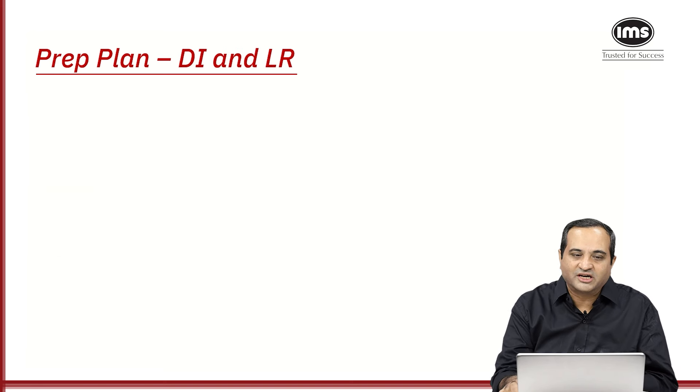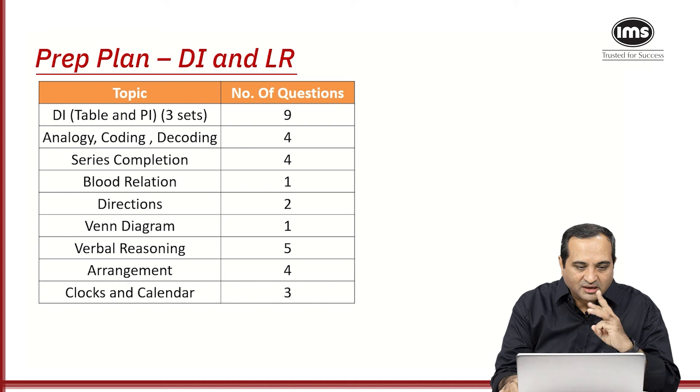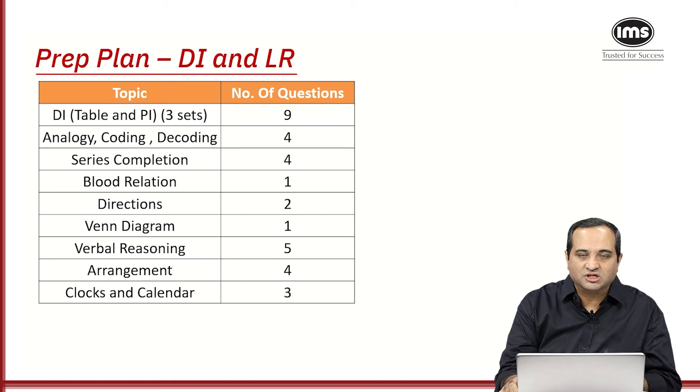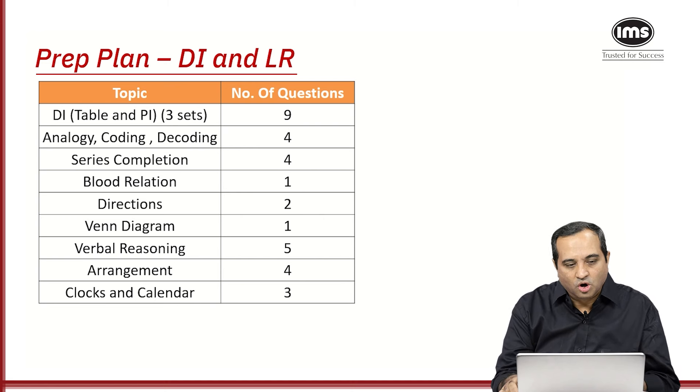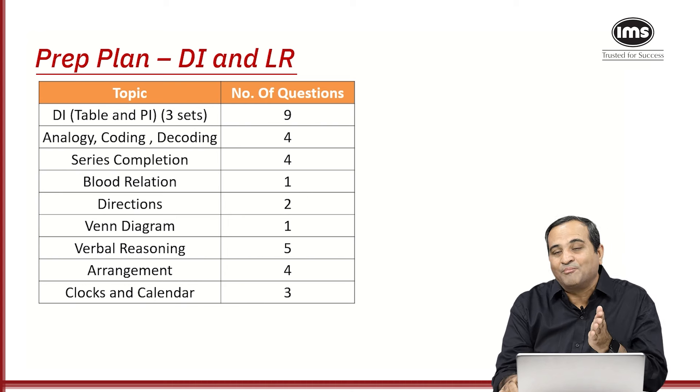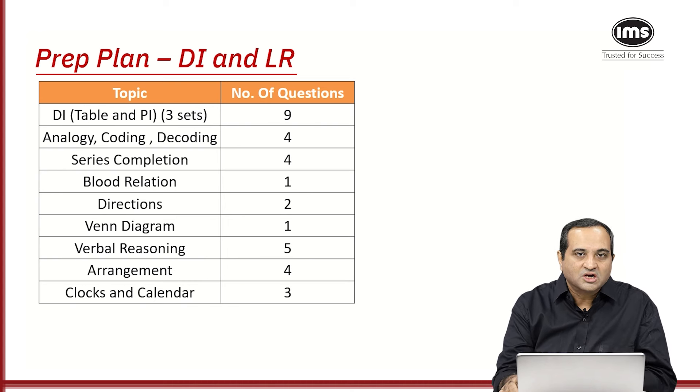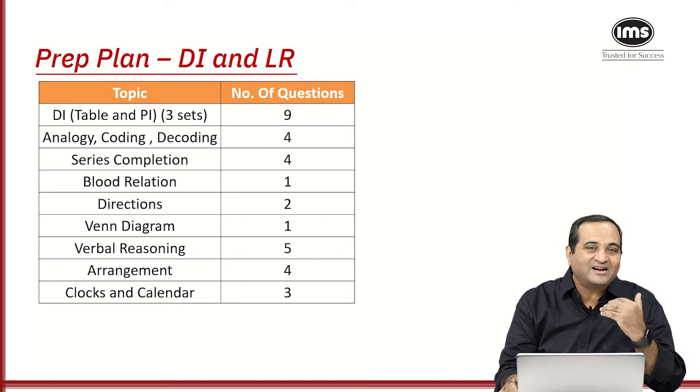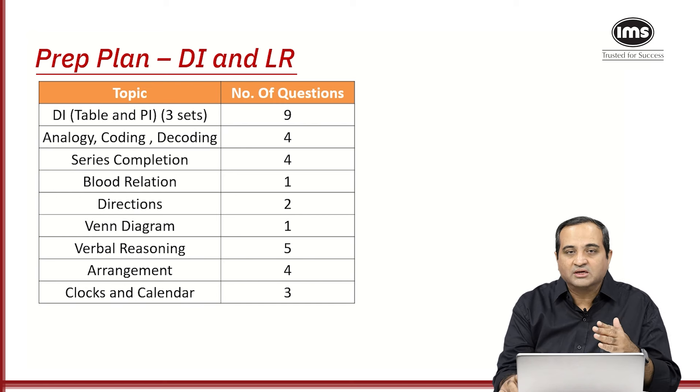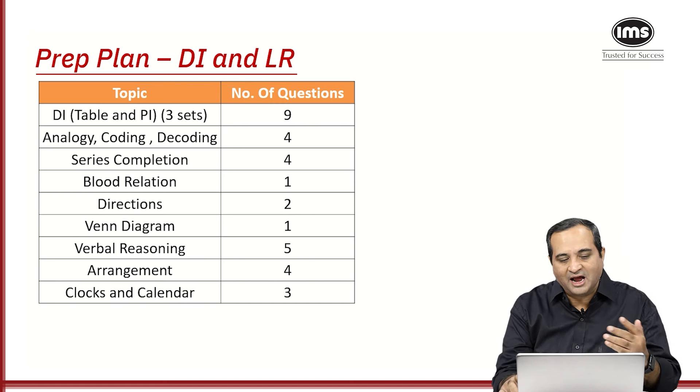Let's look at the third section which is DI and LR. So three sets of DI came last year and it was nine questions. Last to last year, we had 15 questions of DI. So this year, there were three sets. One set was a tabular data with four questions. The other set was a pie diagram with three questions. And the third set was again a tabular data with two questions. If you look at the other type of questions, you have analogy, coding, decoding, series completion, family tree, and so on.